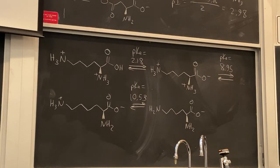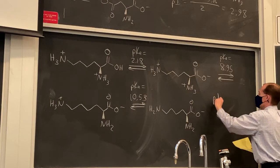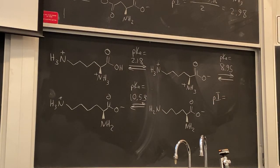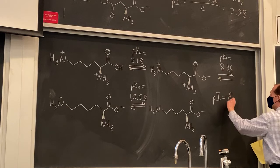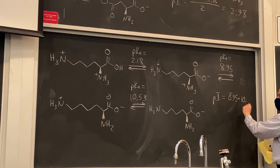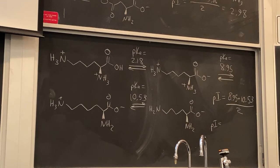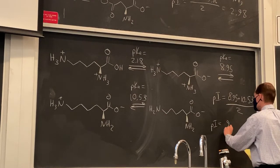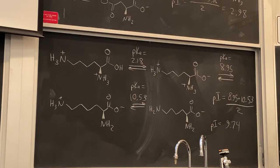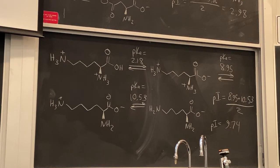For lysine, the zwitterion is the third species — the neutral one with charges balanced. We average the pKa values on either side: 8.95 and 10.53, giving a pI of 9.74. As expected, having a basic functional group in the side chain raises the isoelectric point. Conversely, an acidic functional group in the side chain lowers it.